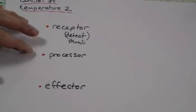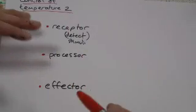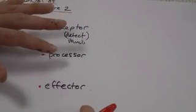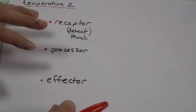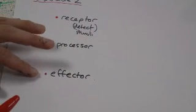These cells can detect a change in the environment, or detect stimuli. A processor is something that will coordinate the response, or make sense of that information as it comes in, and make the decision on what to do.